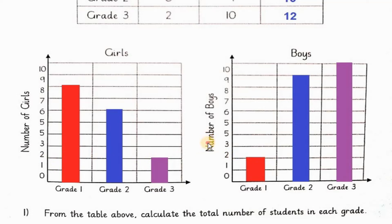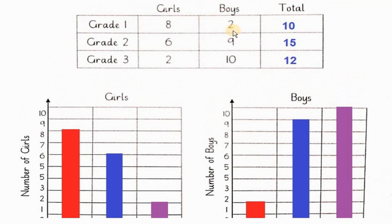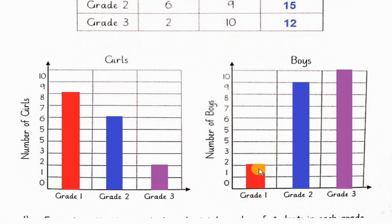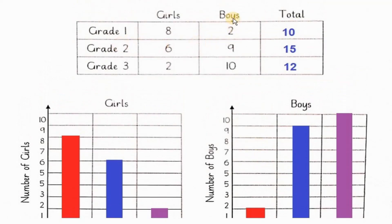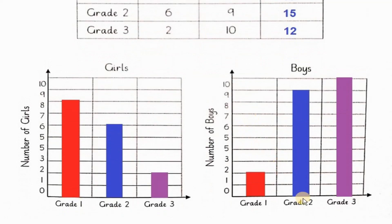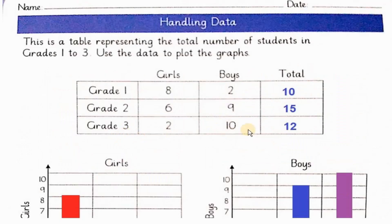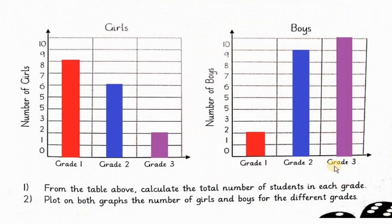Now for boys. Grade one में boys की تادाد two है — so grade one का graph بنانے میں height two تک होगا. Grade two में boys nine है — so جو bar بنائیں گے وہ nine تک ہوگا، height nine تک. Grade three میں boys ten ہیں — so جو bar بنانا ہے اسکی height ten تک ہوگی.